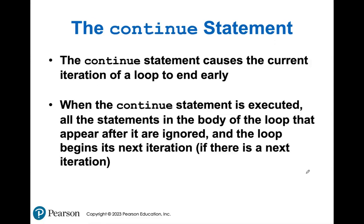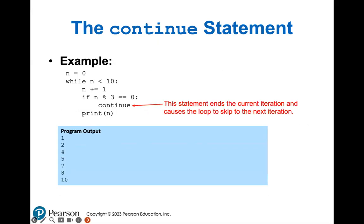Continue is similar to break, but instead of ending the whole loop, it ends just the current iteration. Break stops the whole loop; continue stops one iteration. In this example: if n modulo three equals zero - if dividing n by three gives a remainder of zero - we end the current iteration. So one and two are printed, but three is not, because the continue statement ends the iteration before reaching the print statement. You also don't see six or nine, because of the continue statement.